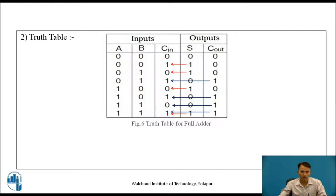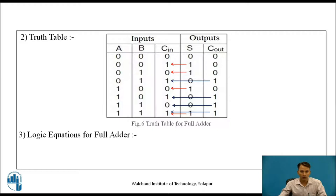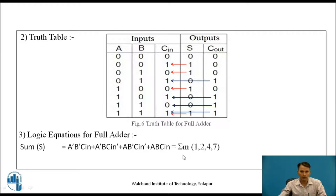From this truth table, we can observe that we are getting sum for four combinations of input. The logic equation for the full adder sum is written as Σm(1, 2, 4, 7).